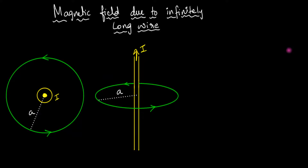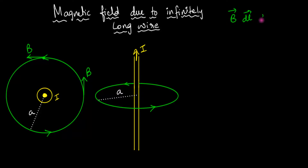To use Ampere's law, we have to first choose a loop. Now Ampere says you can choose whatever loop you want. But if you want to get this derivation as simple as possible, then we have to choose a loop cleverly. We know that the magnetic field at every point is going to be tangent to this circle, and the magnetic field on this circle is going to be constant in magnitude because it's at the same distance A. So it would be wise to choose a loop in which the magnetic field B and dL are in the same direction, and we also want the field value to be constant everywhere on the loop — we want B to be uniform so that we can take B outside the integral.